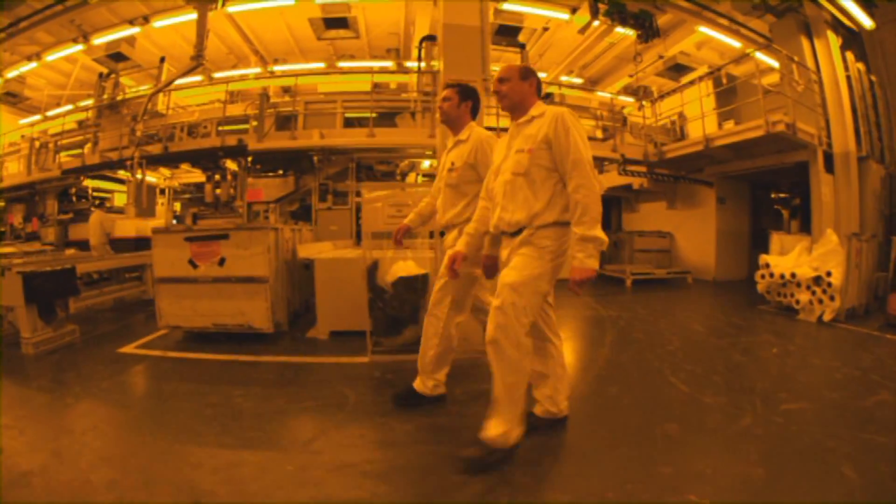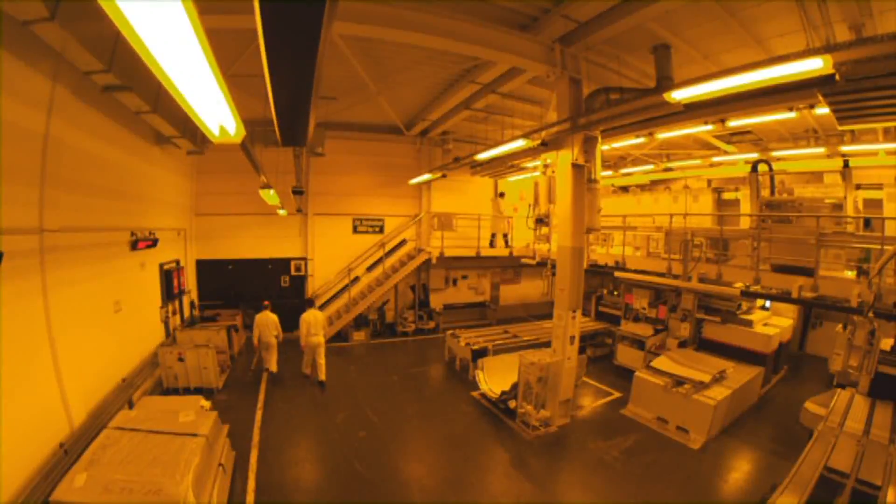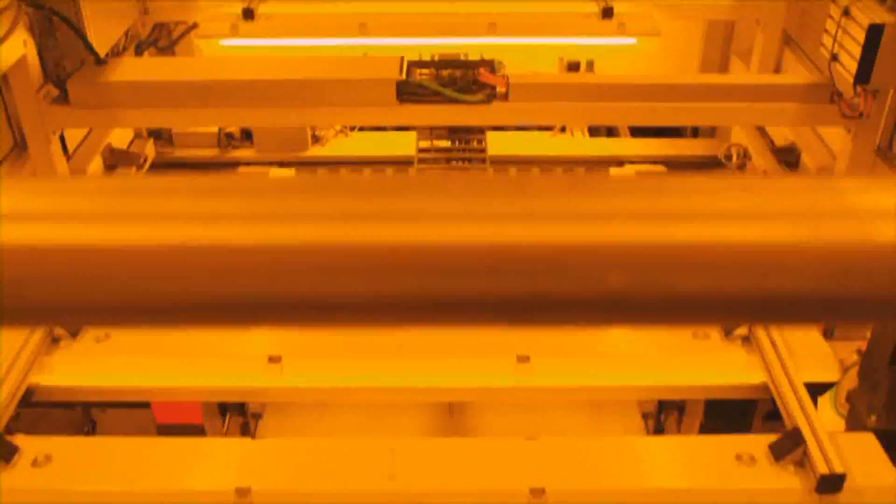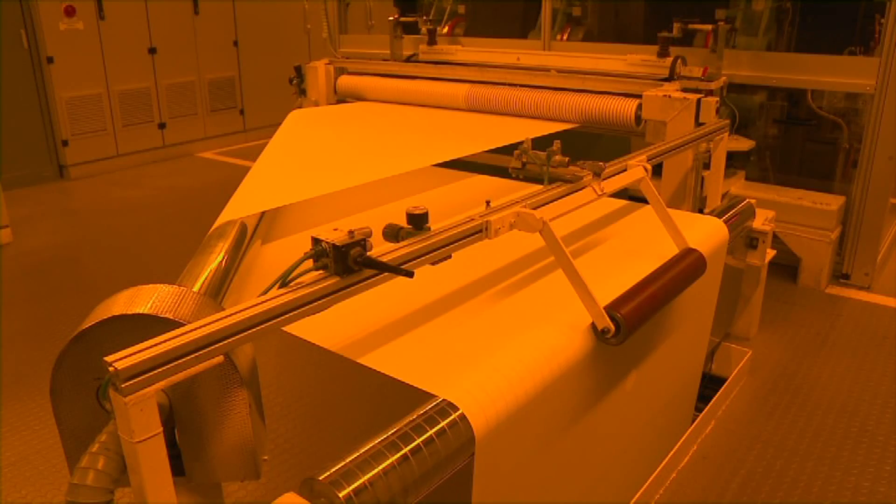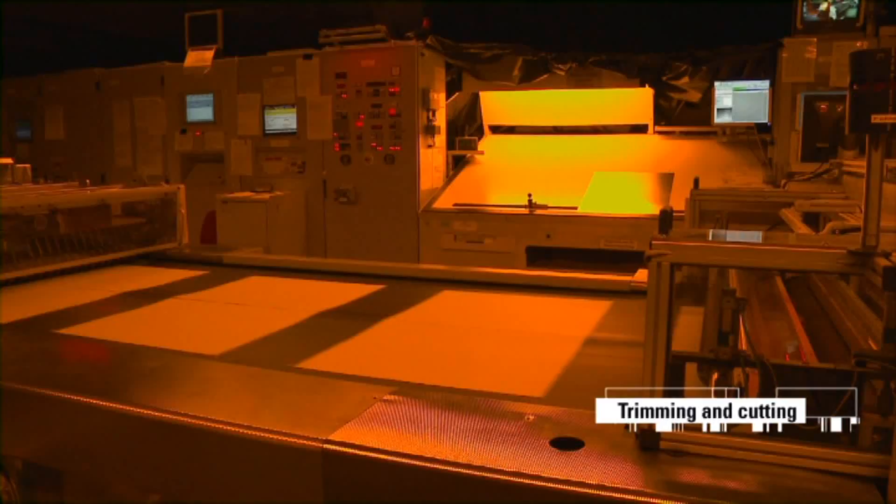After thorough inspection, the coated aluminum is trimmed and cut to the required size in the in-line converting hall. The final sized plates are covered with a protective sheet to prevent them from damaging each other in transit.